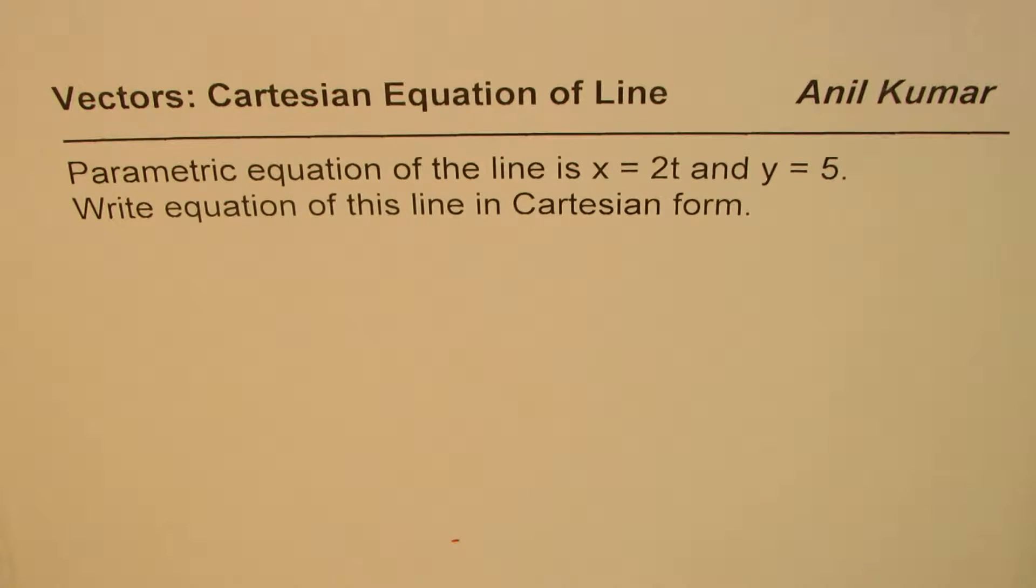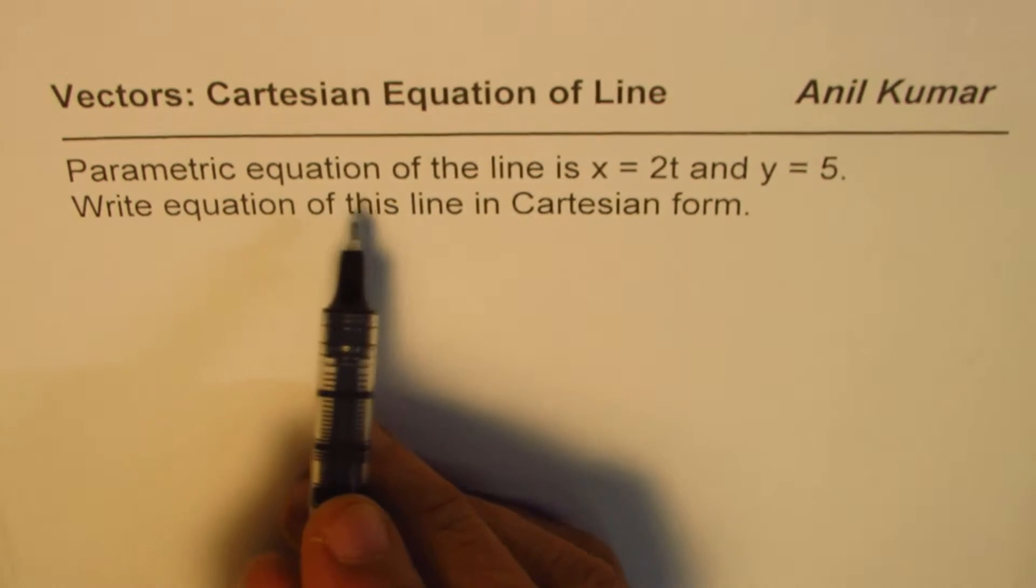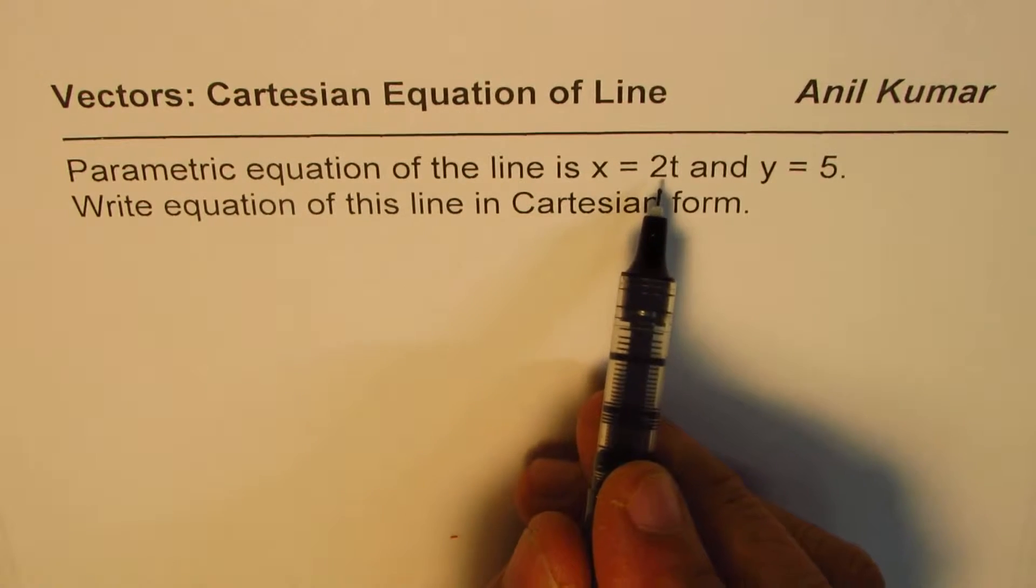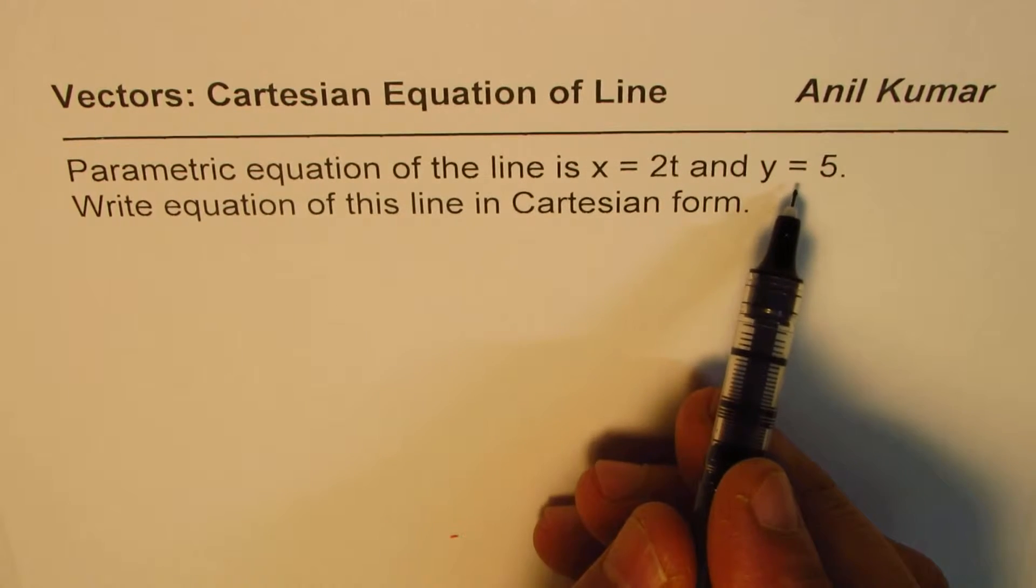I'm Anil Kumar and in this video we will learn how to write equation of the line from parametric form to Cartesian form. The question here is: parametric equation of the line is x equals 2t and y equals 5, write the equation of this line in Cartesian form.